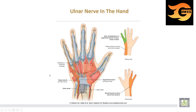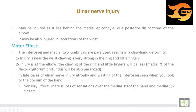The ulnar nerve in the hand supplies the hypothenar muscles, the medial third of the palm, and the medial one and a half fingers on both palmar and dorsal surfaces.